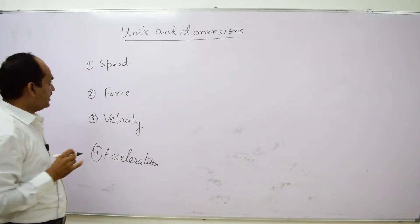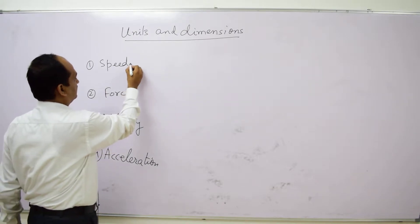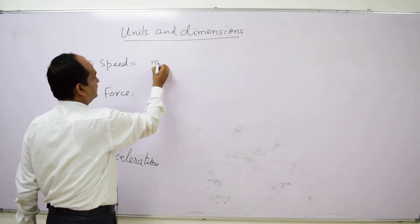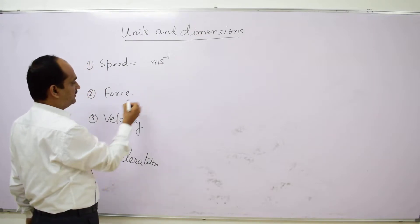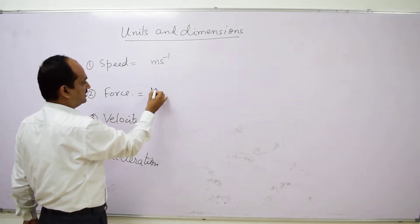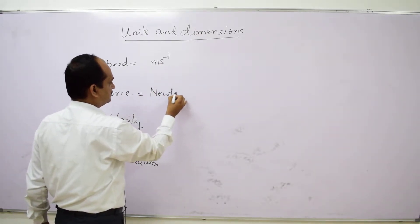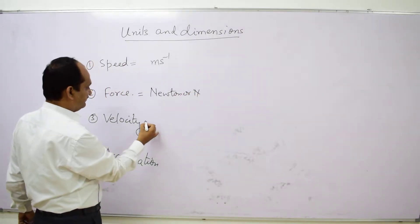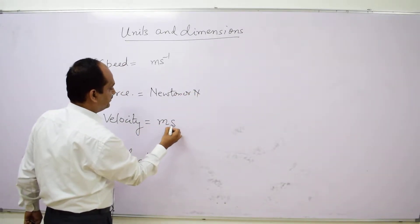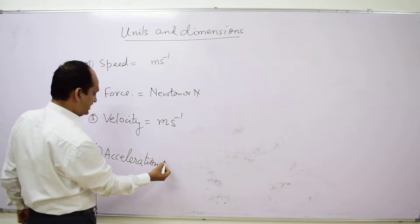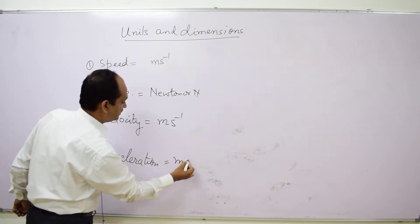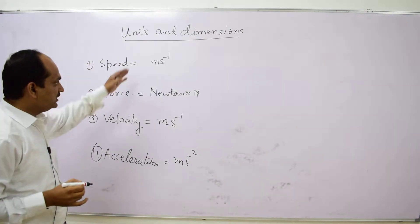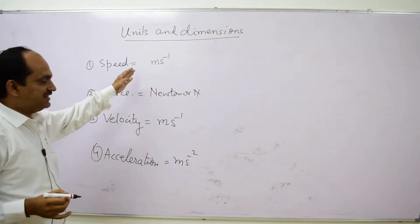We know that the formula for speed has the unit meter per second, force has the unit Newton, velocity again meter per second, and acceleration meter per second square. All these units are written in the SI system.